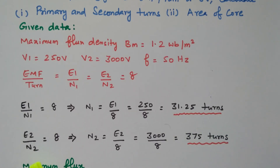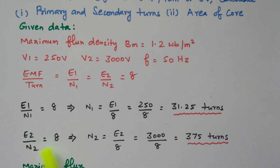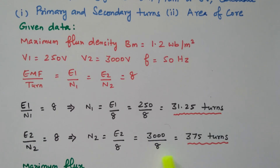Similarly, the EMF per turn on the secondary side gives E2/N2 = 8, so N2 = E2/8. E2 is already given as 3000V, so N2 = 3000/8 = 375 turns. The number of turns available in the secondary winding is 375.